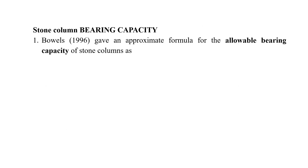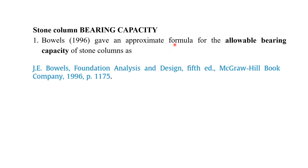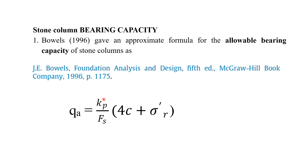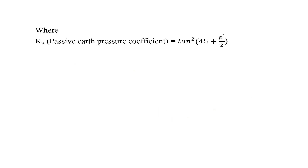Now we can see how we can determine the bearing capacity of the stone column. Bowles (1996) gives an approximate formula for the allowable bearing capacity of the stone column. The allowable bearing capacity is equal to Kp divided by the factor of safety, multiplied by (4c + σ'r). Here, Kp is the passive earth pressure coefficient, equal to tan²(45 + φ'/2), which we have already studied in the earth pressure chapter.